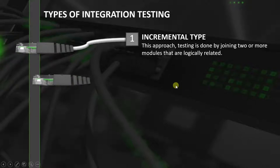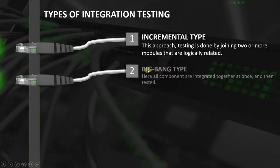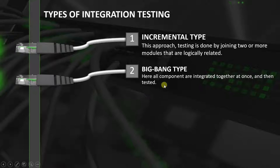A second type of testing is called big bang type. Here, all components are integrated together at once and then tested. We will wait for a week until our software is entirely ready, and then we will start with the integration testing.